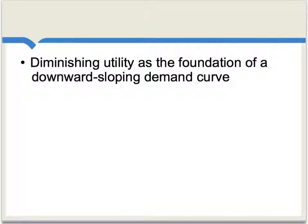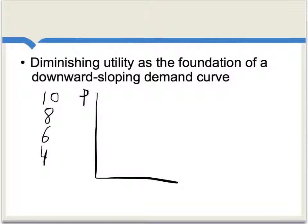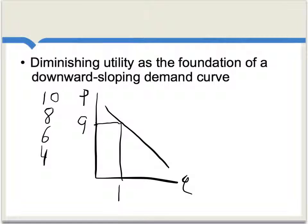Dupuis had a very clear sense of diminishing marginal utility and how that would serve as the foundation for a downward-sloping demand curve. Imagine, for instance, an individual who values the first unit of a good at 10, the second unit of the same good at 8, the third unit of the same good at 6, the fourth unit at 4, and so on. We then can draw a graph which has price on the vertical axis, quantity on the horizontal axis, and the demand curve for that individual will be downward-sloping. For instance, at a price equal to 9, we will find that the individual will buy just one unit of the good — the unit which is worth 10 — but not the second unit which is only worth 8.